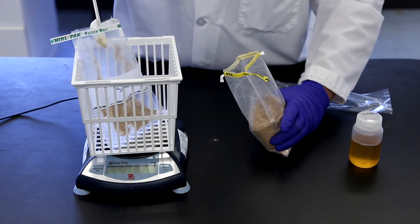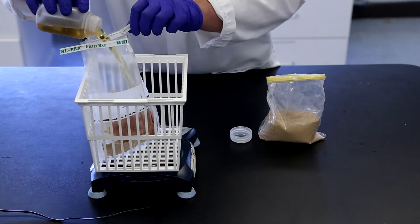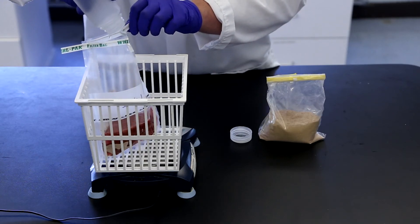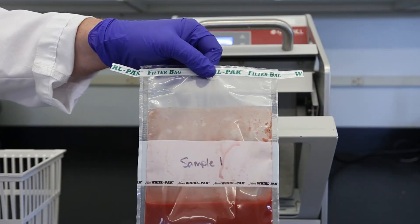Next, weigh out 10 grams of sample into the sample bag, ensuring all sample is on one side of the filter. Pour the TSB or neutralizing broth into the bag, homogenize by manual or mechanical means, to create a 1 to 10 sample dilution.